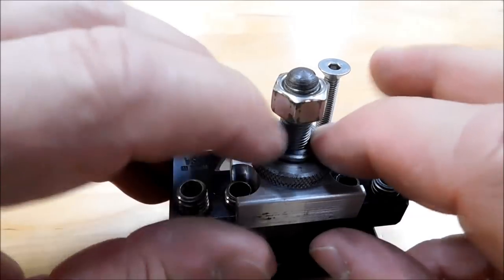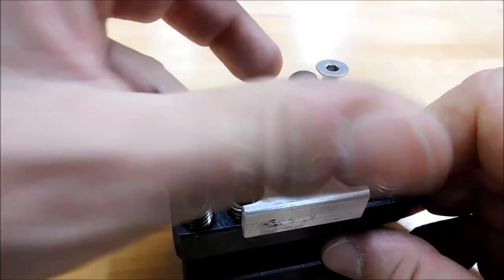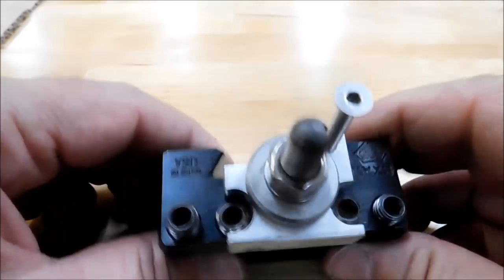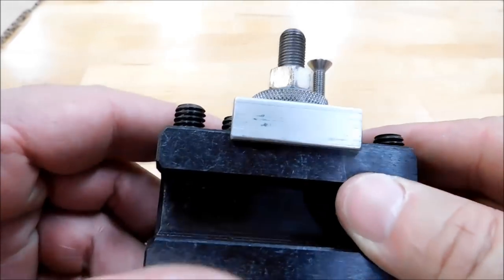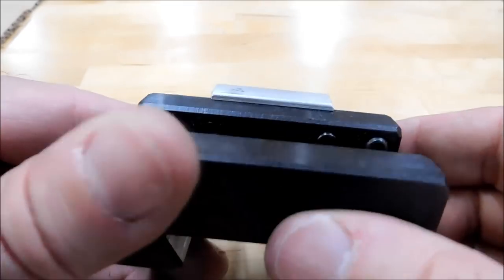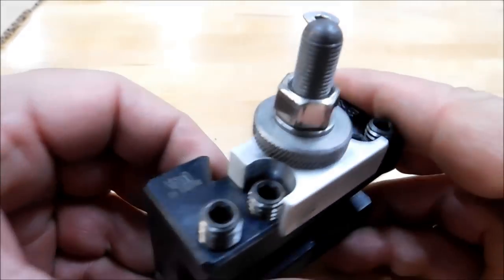Tighten it down. Lock it off. You can still access all the screws on the top of the tool holder. There is a flange on it so that it can find its position every time.